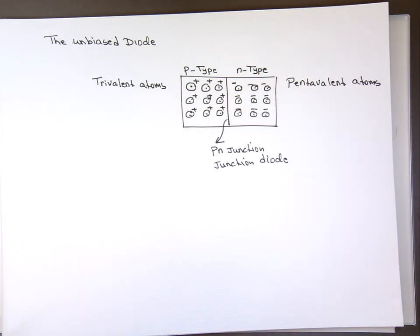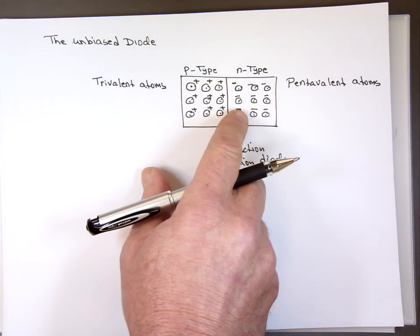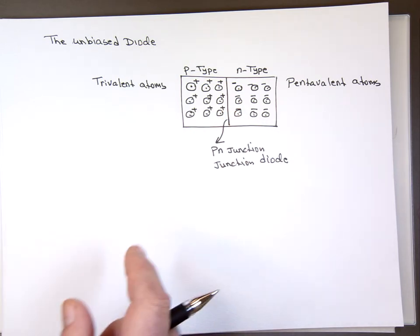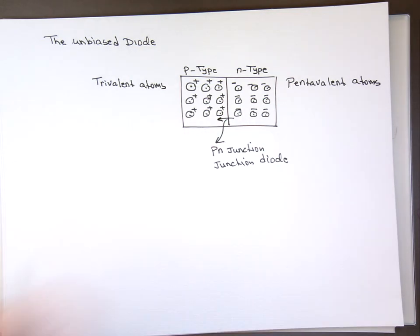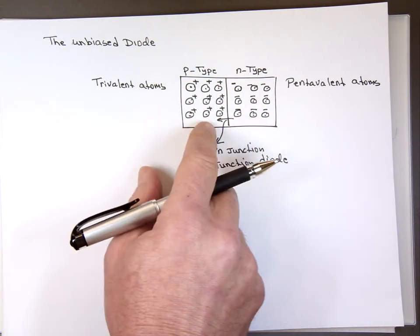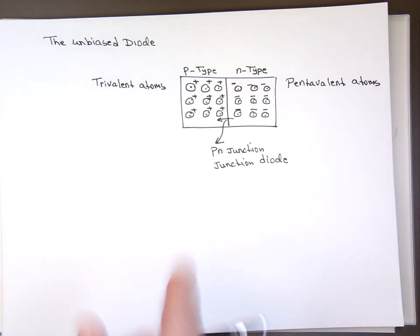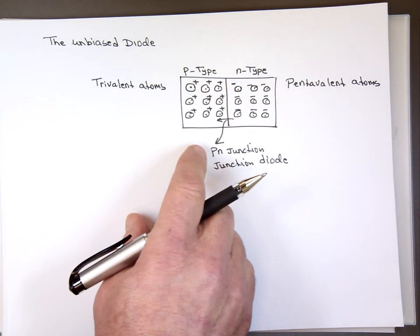What happens when you put all these negative charges here and all these plus charges here? The negative charges don't want to be next to each other, so they repel each other and push electrons away. Some of these electrons tend to spread in all directions and some will actually cross this junction — that's called diffusion. When a free electron diffuses across this junction, it becomes a minority carrier on the p-type end, where the plus charges are the majority carriers.